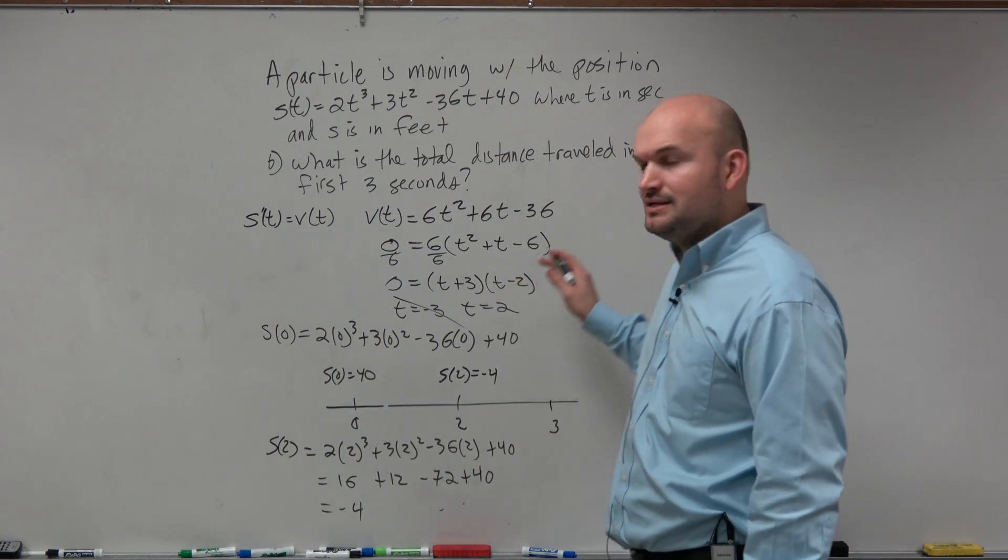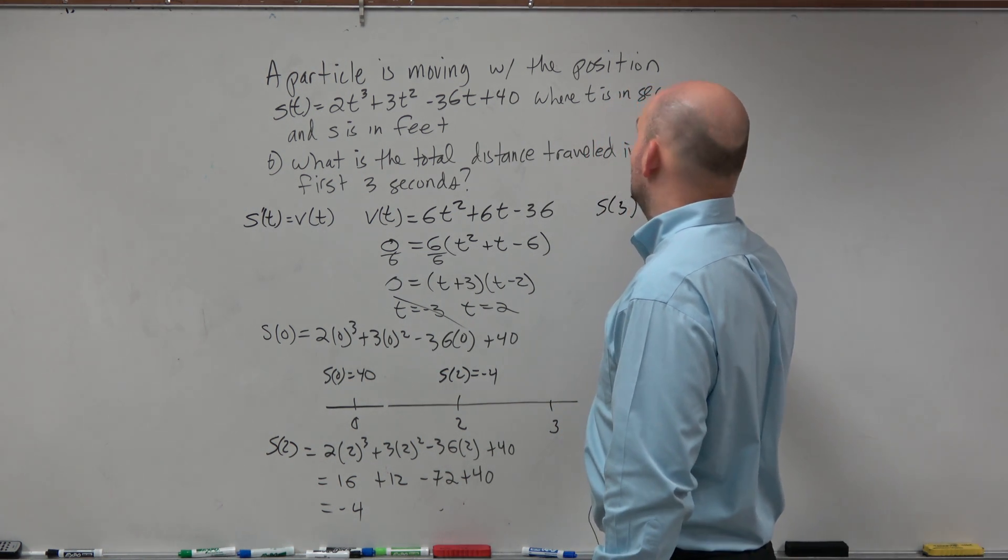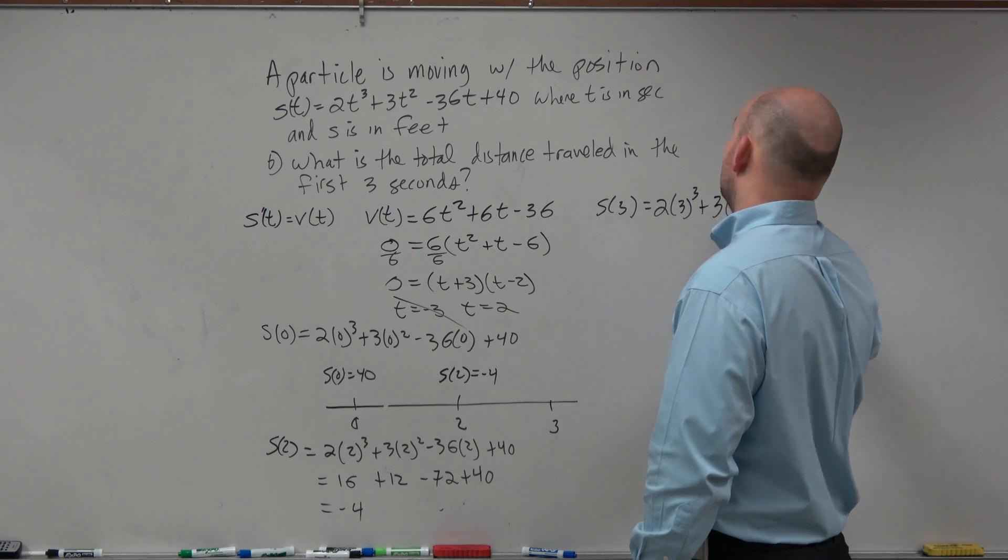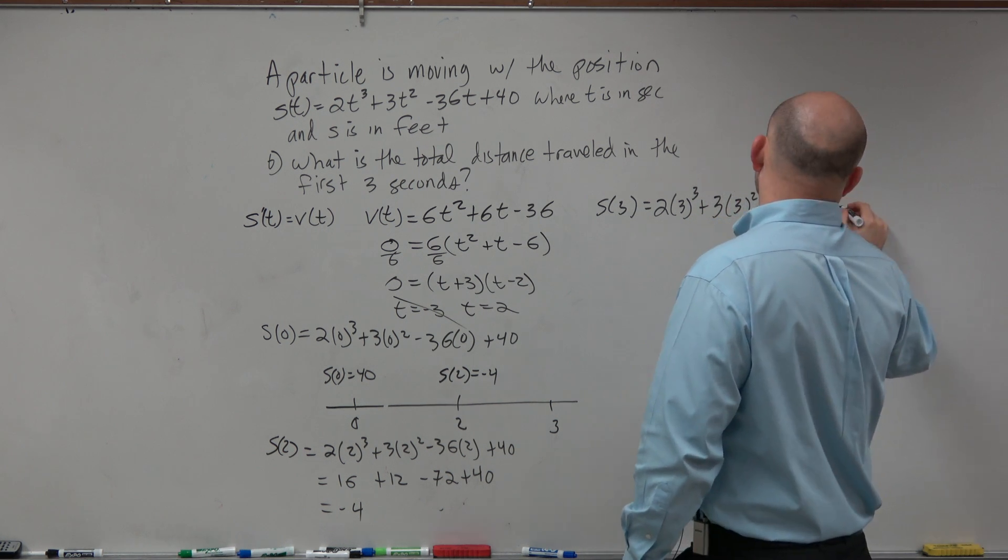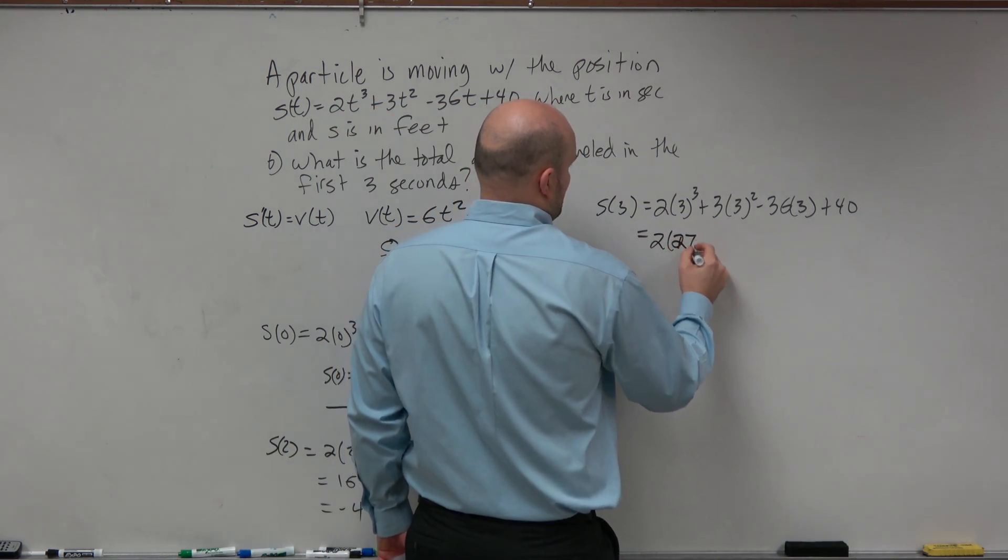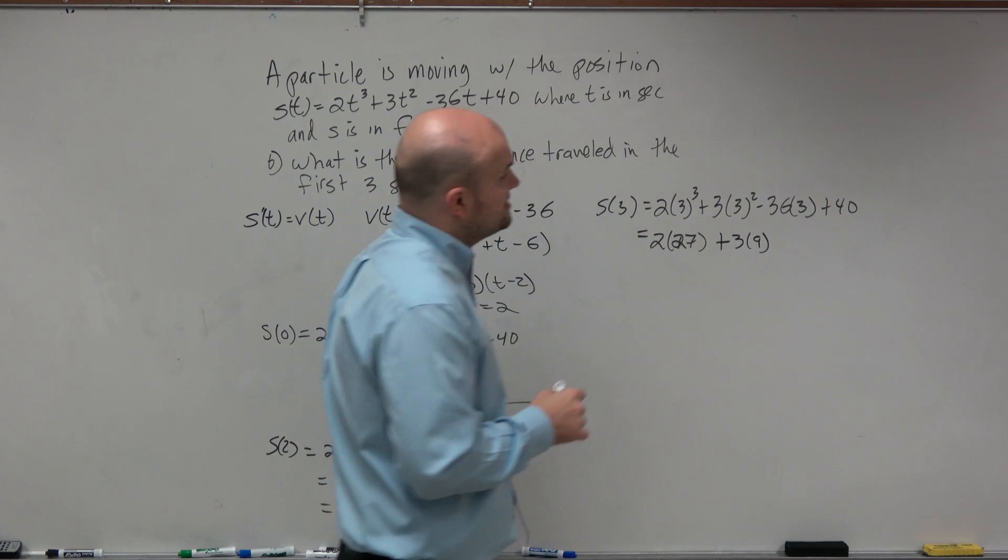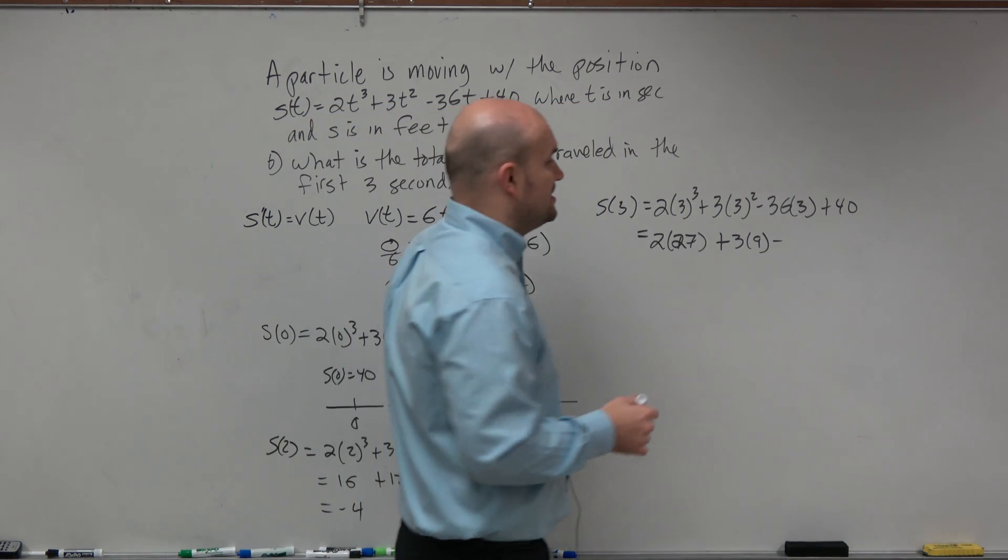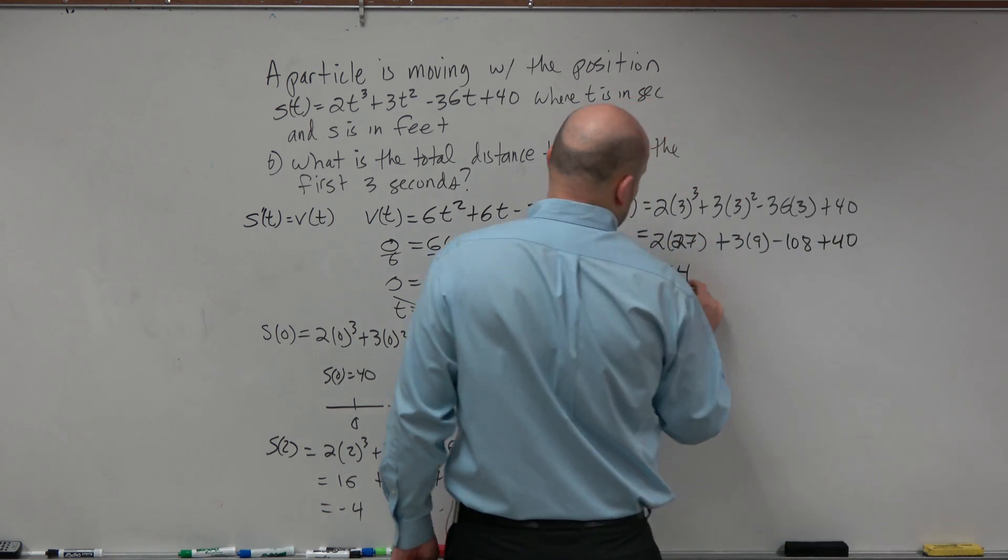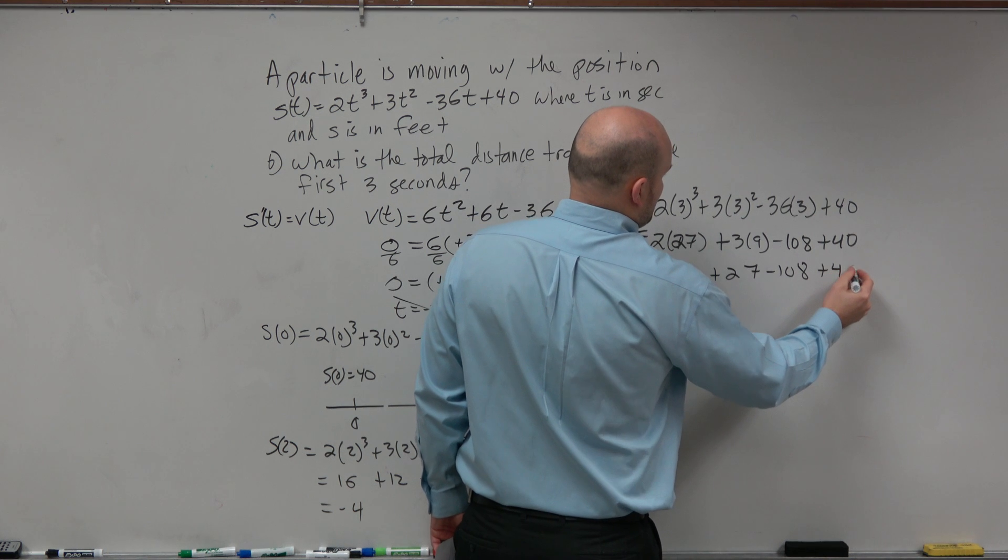And then last but not least, let's go into finding s of 3. s of 3 is 2 times 3 cubed plus 3 times 3 squared minus 36 times 3 plus 40. 3 cubed is going to be 27, 3 times 3 times 9, 36 times 3 is going to be 108. That's going to be 108, 54, 3 times 9 is going to be plus 27, minus 108, plus 40.